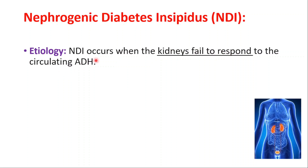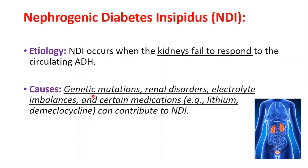Nephrogenic diabetes insipidus can be caused by genetic mutations, renal disorders, electrolyte imbalances, and certain medications like lithium and demeclocycline.